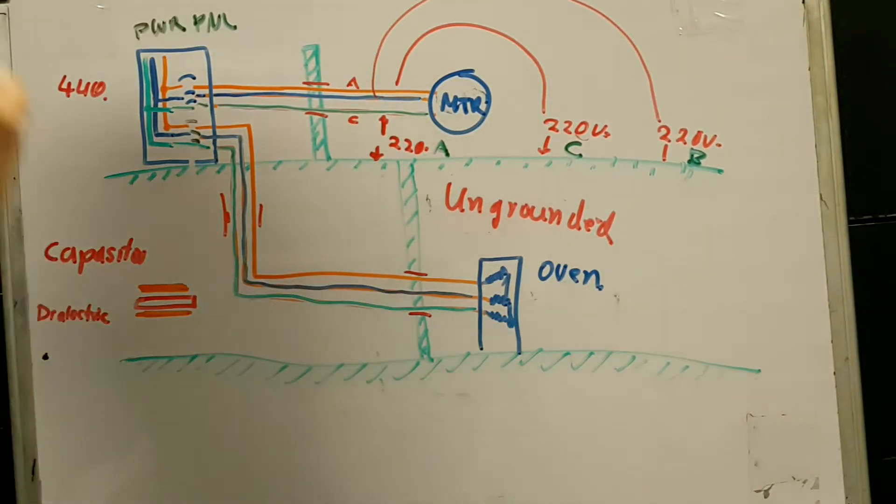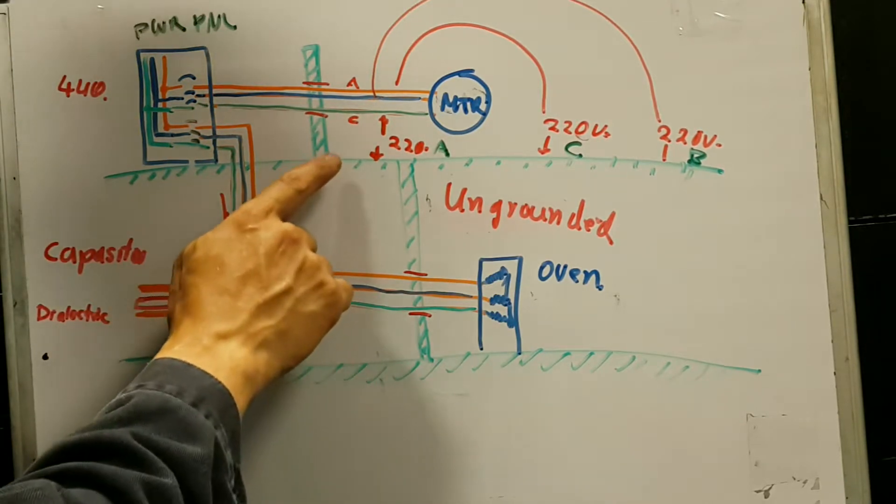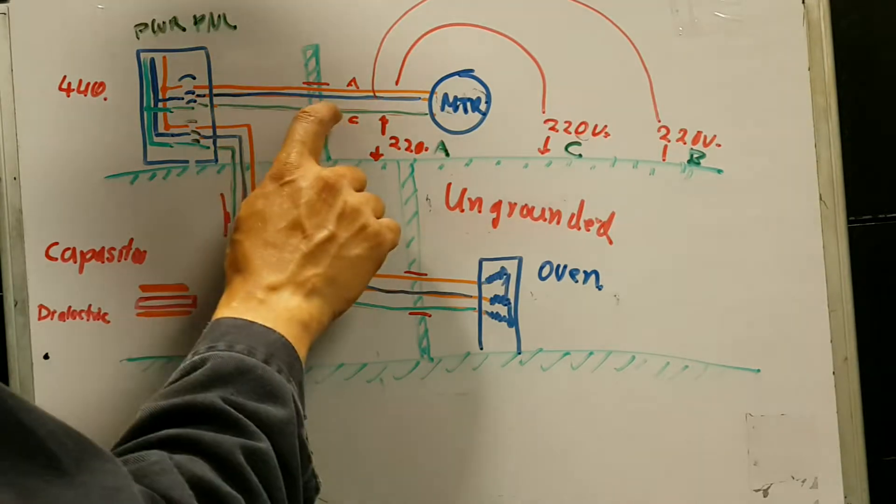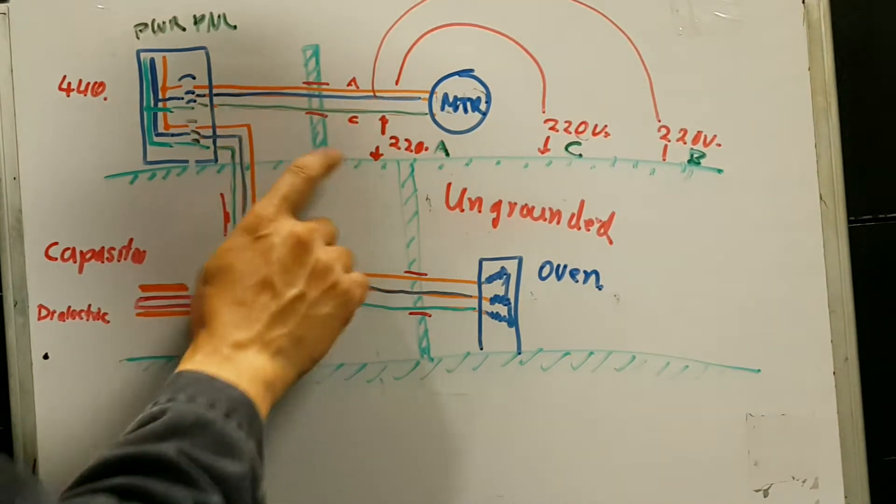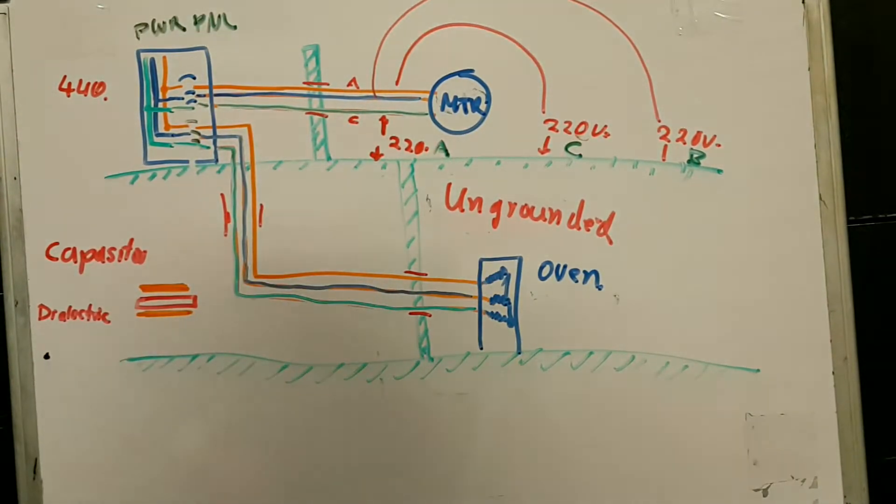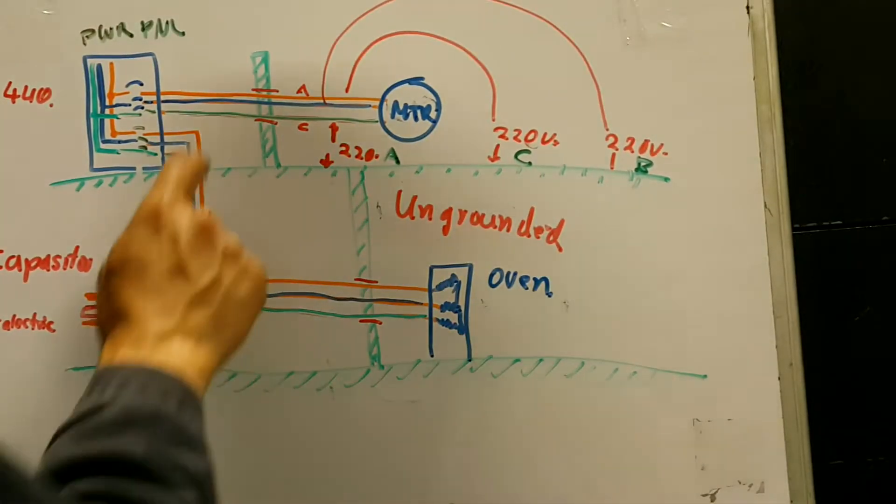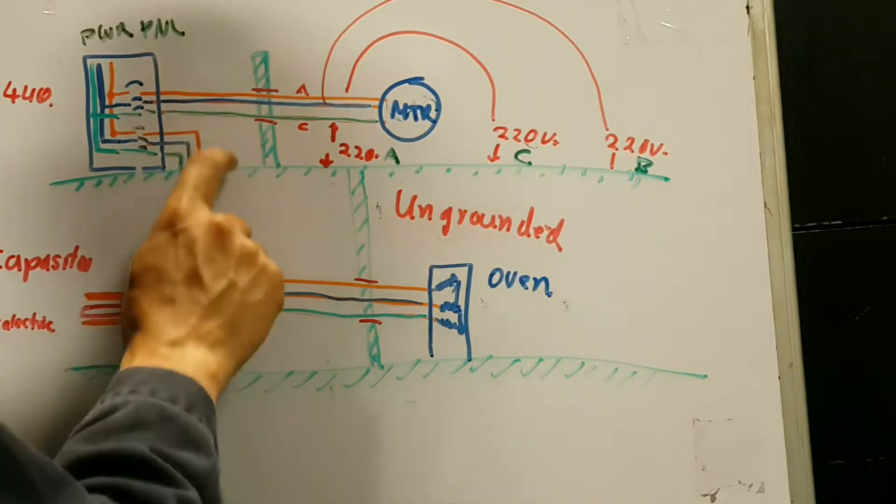And because of that, now you actually get a difference of potential that is actual real power between one of these phases and the ship. I'm going to stop and show you how I put a contactor connected between one phase and the ship,